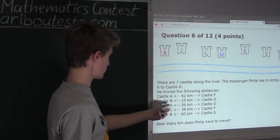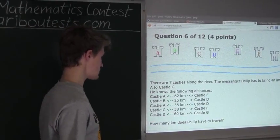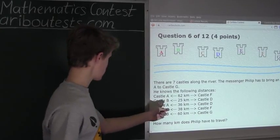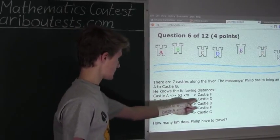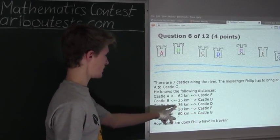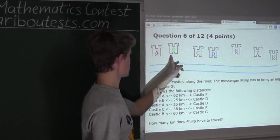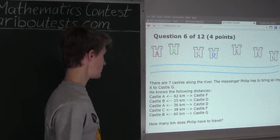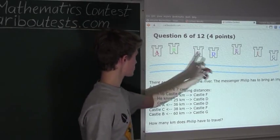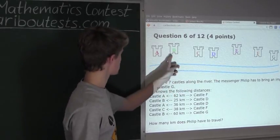Now the only other statement with Castle B in it is this statement here. Castle B to Castle D is 25 kilometers. So from Castle B to D, this is 25 kilometers. Alright, now since we have D, Castle D, in relation to Castle B...